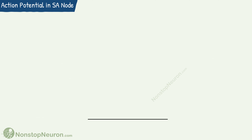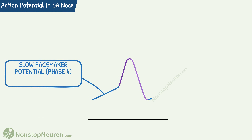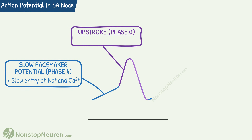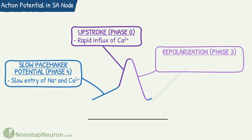Now the action potential in the SA node looks like this. Here phase 4 or slow pacemaker potential is due to the slow entry of sodium and calcium. Phase 0 or upstroke is due to a rapid influx of calcium. And phase 3 or repolarization is due to cessation of calcium entry and exit of potassium ions. Resting membrane potential in the SA node is about minus 60 mV.